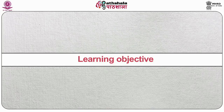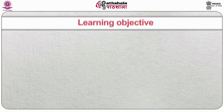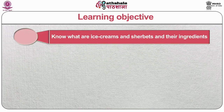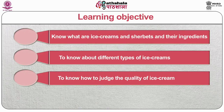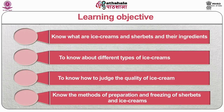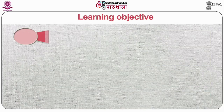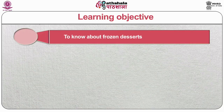The learning objectives of this module are: to know what are ice creams and sherbets and their ingredients, to know about different types of ice creams, to know how to judge the quality of ice cream, to know the methods of preparation and freezing of sherbets and ice creams, and to know about frozen desserts.